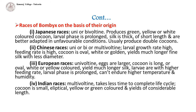Indian races: multivoltine, taking less time to complete the life cycle. Cocoon is small, elliptical, yellow or green colored, and yields silk of considerable length. Silkworm is reared extensively in the states of Karnataka, West Bengal and Jammu and Kashmir. About 85% of the country's production is contributed by Karnataka by rearing multivoltine hybrids, enabling sericulturalists to harvest 5 to 6 crops a year. Jammu and Kashmir, owing to its favorable climate during autumn and spring, produces silk by rearing univoltine silkworms.